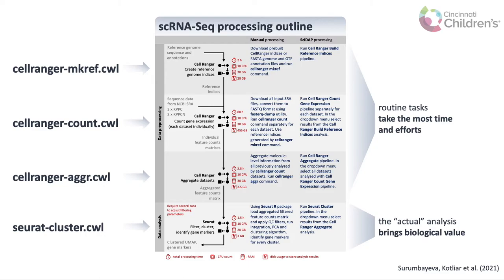Unfortunately, the pre-processing steps require the most computational resources and time. Data analysis usually starts with generating reference genome indices for CellRanger. On the next step, we map each of our datasets to that reference genome using the CellRanger count workflow. As a result, we have feature barcode matrices for all five datasets. And then, because in this particular case we are interested in analyzing all five datasets jointly, we run the CellRanger aggregate pipeline. Once all of these pre-processing steps are finished, we can proceed to the clustering analysis.